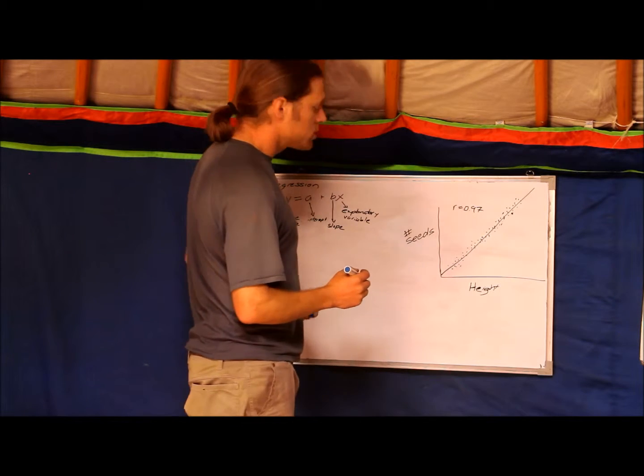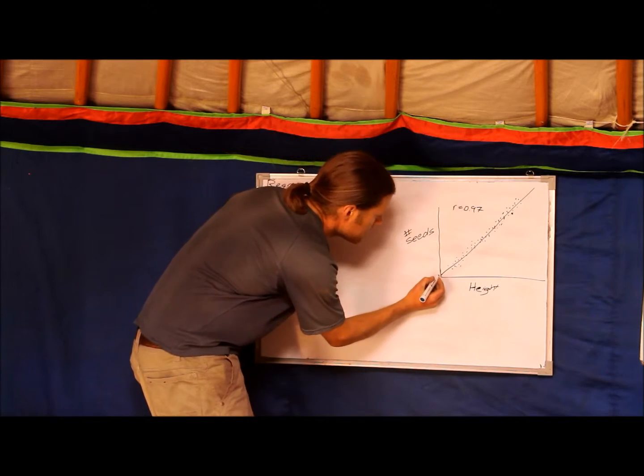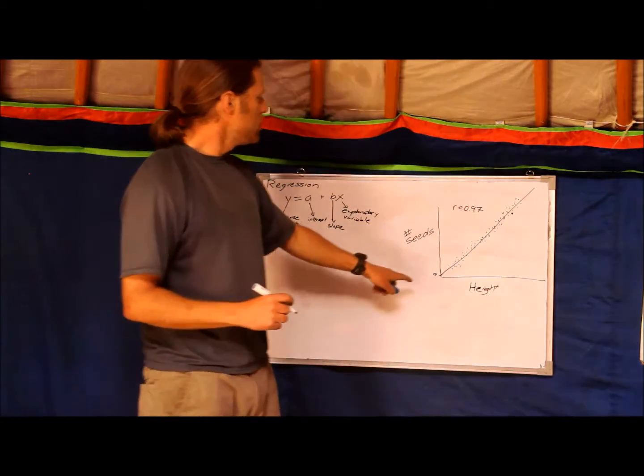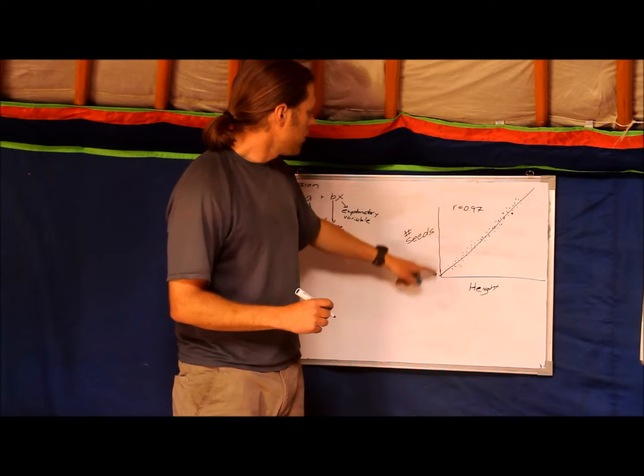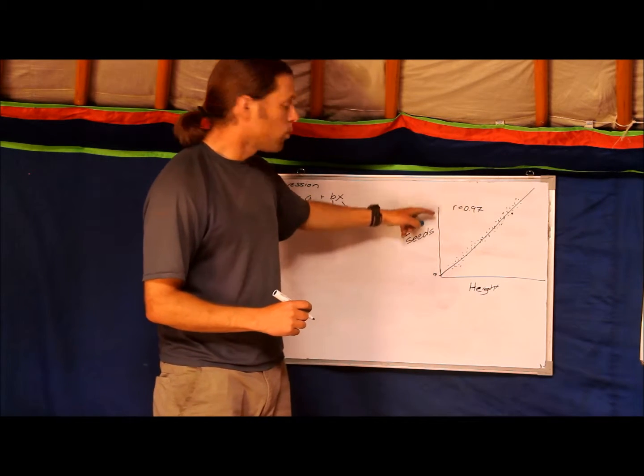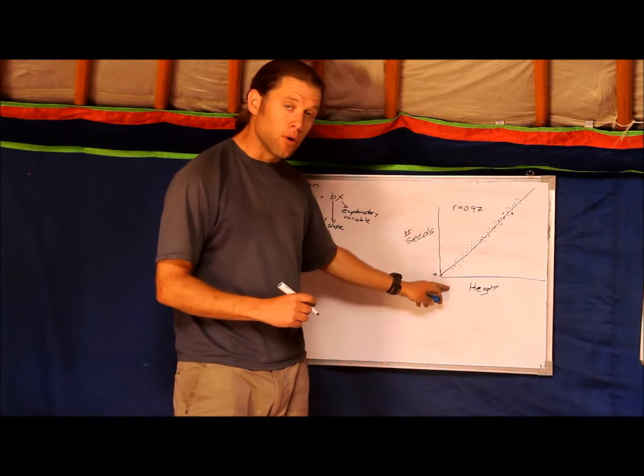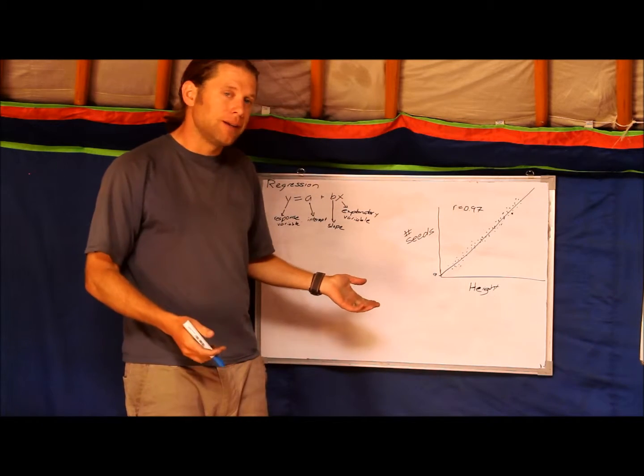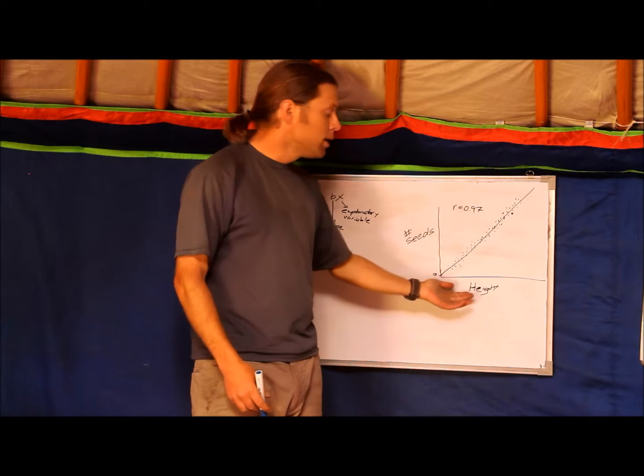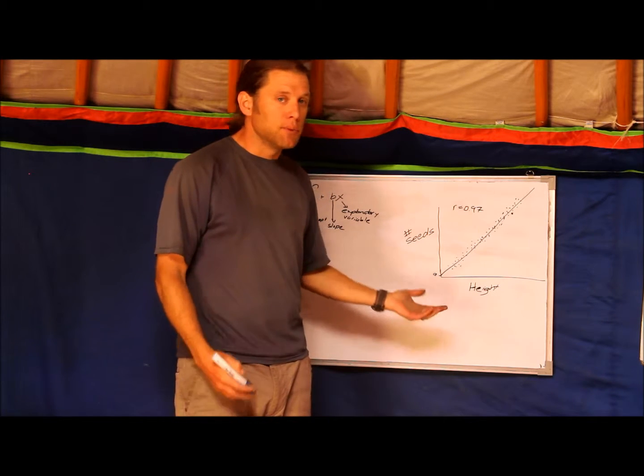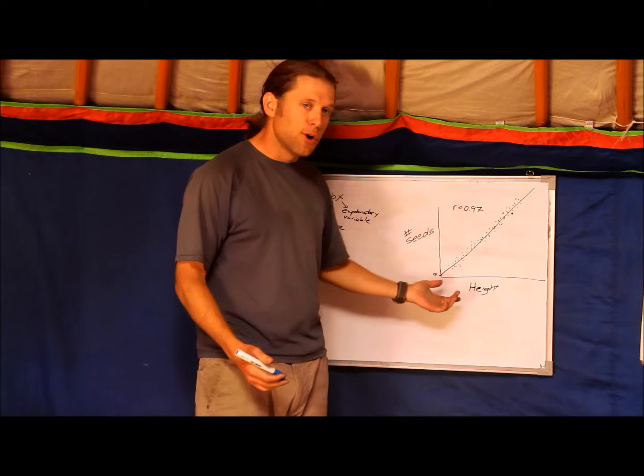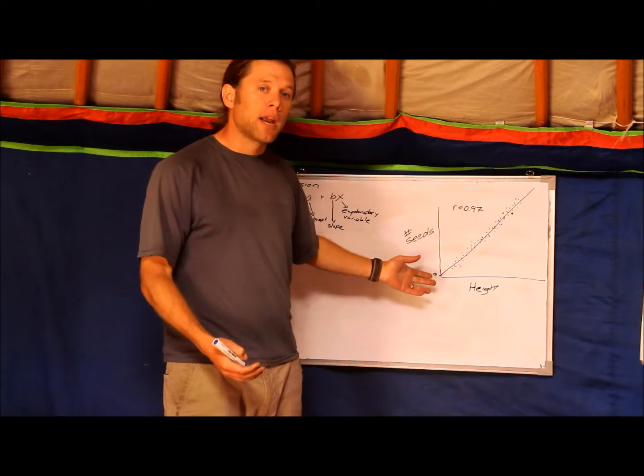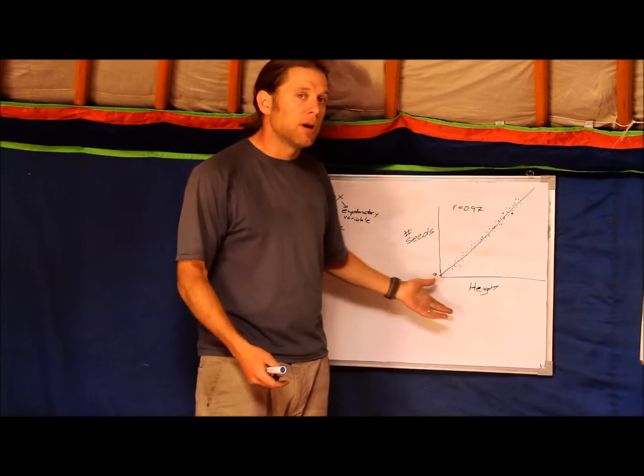Some key points of this line are the intercept. Here's the intercept at A. The A here is where the line crosses the y-axis when x is zero. If you think about this biologically in this example, that doesn't make any sense. How many seeds does a plant have which is of zero height? A plant of zero height is not a plant. It doesn't exist. In this case, A is just a mathematical conceptual number.